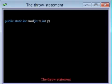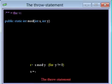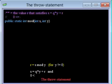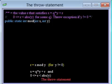We write a function that calculates x mod y for non-zero integer y. This is the value r that satisfies x equals q times y plus r, and 0 is at most r less than absolute of y for some q.